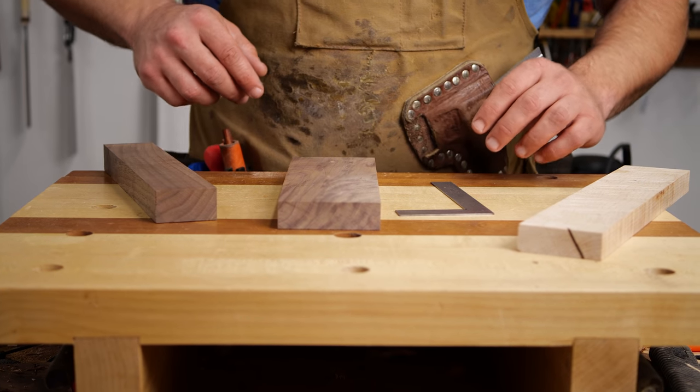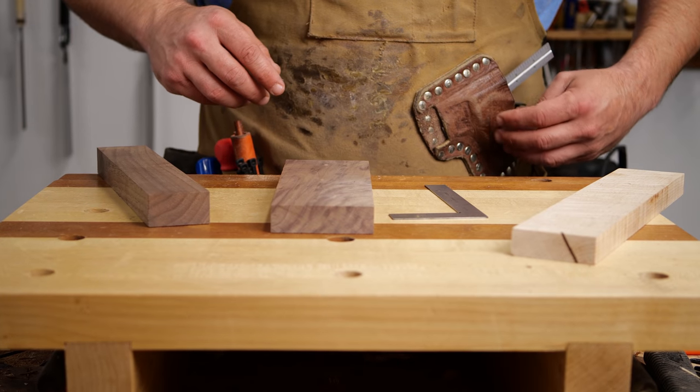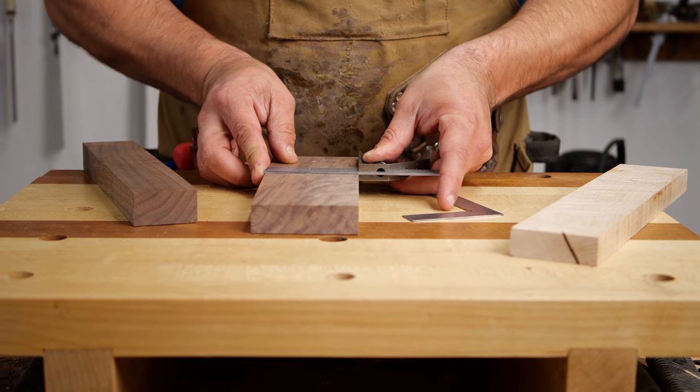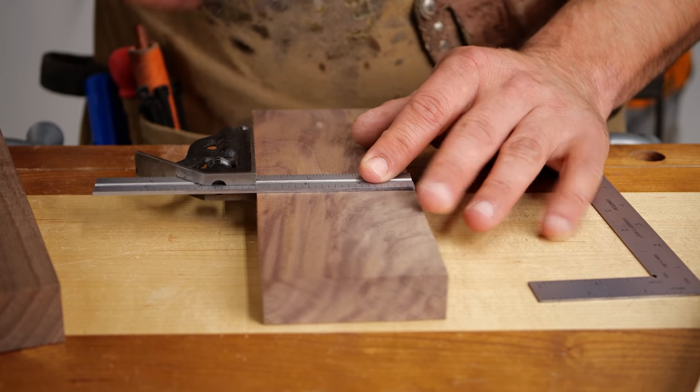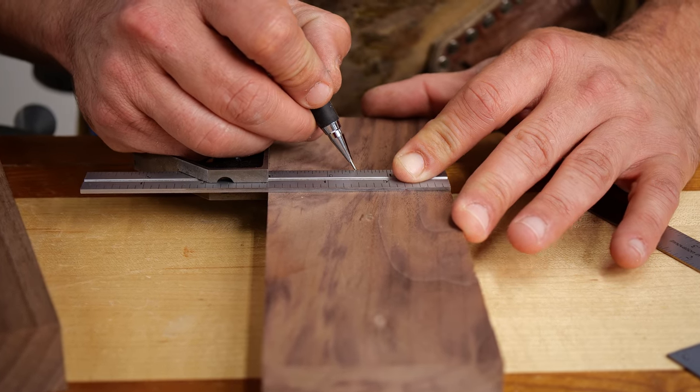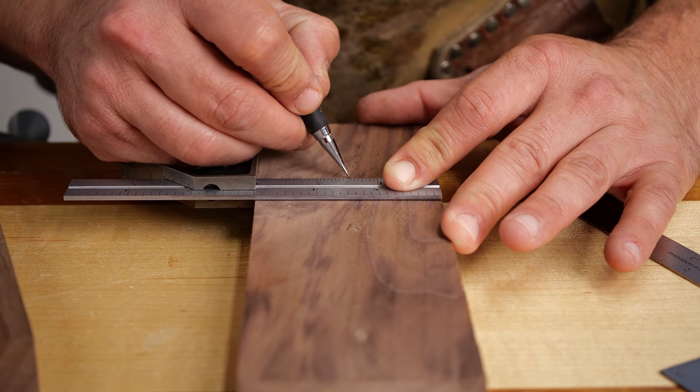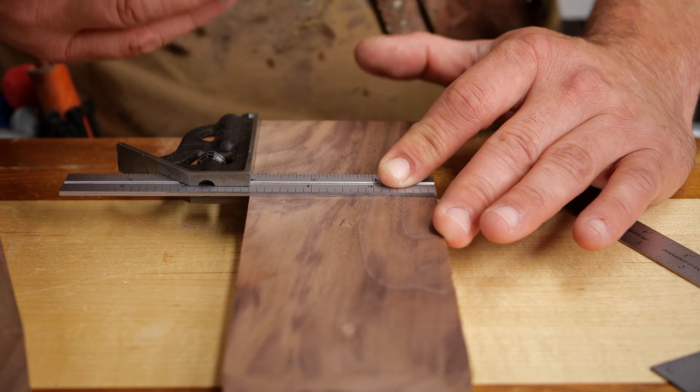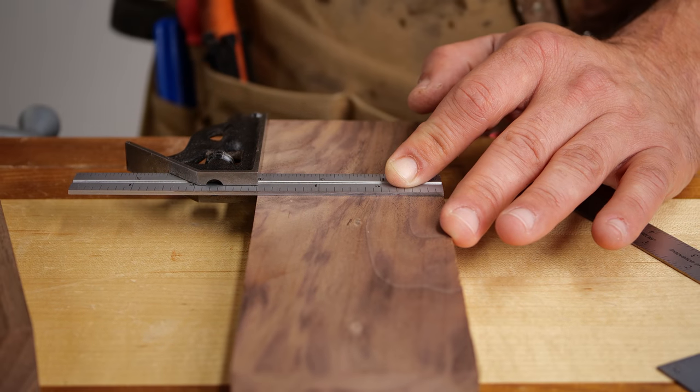To lay these out, what I like to do obviously first is find the middle. It's exactly three inches, so our middle is inch and a half. Whenever I'm laying out mortises I start with a pencil, and then when I know that it's where I want it to be I'll move to a marking knife. That marking knife line is going to help you later when you're chiseling and also help you with your router.